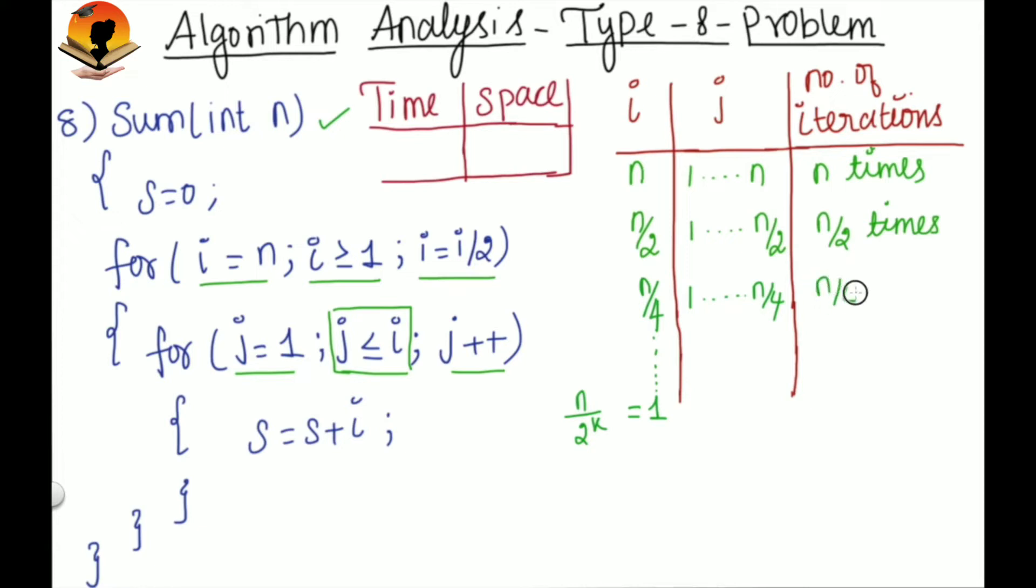This is n by 4 times, and this will be continued till 1 to 1. Here also 1 time. So this is the number of inner loop iterations for each iteration of the outer loop.